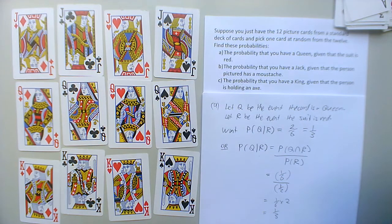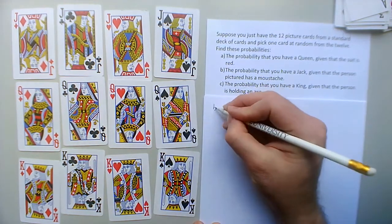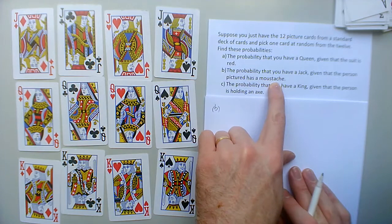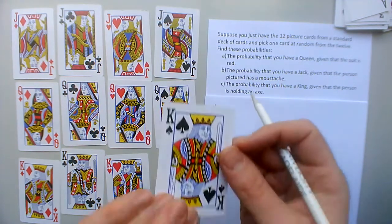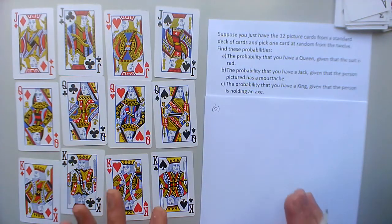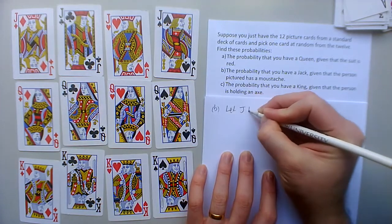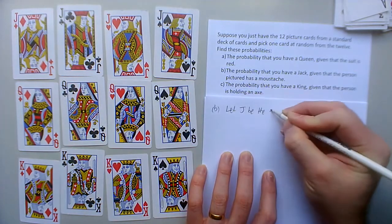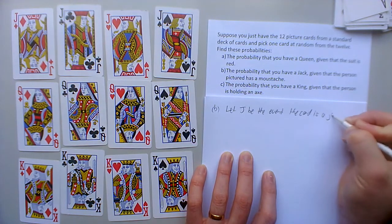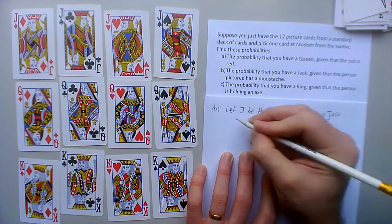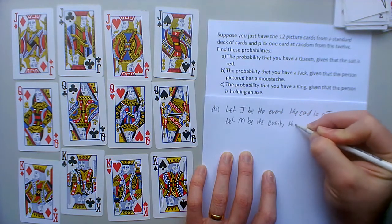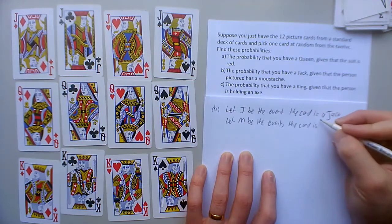All right, let me look at question b. The probability that you have a jack given that the person pictured has a mustache. Oh yeah, look, he's got a mustache. Okay, well I'll give them letters like I did before. Let J be the event the card is a jack. Let M be the event the card has a mustache.